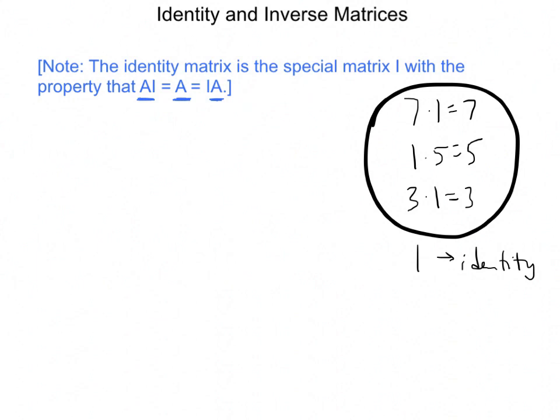So what does that identity look like? Well, it's a square matrix, and there's a different identity matrix for each square size. So the 2 by 2 identity matrix is 1, 0, 0, 1. The 3 by 3 identity matrix, it's 1, 0, 0, 0, 1, 0, and 0, 0, 1.